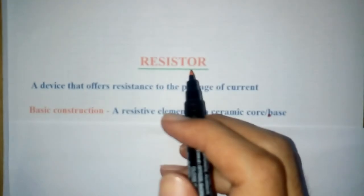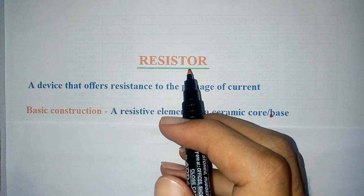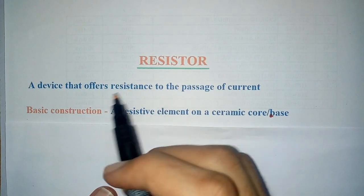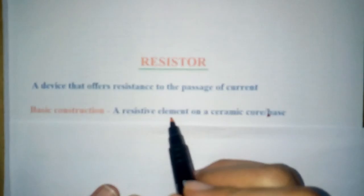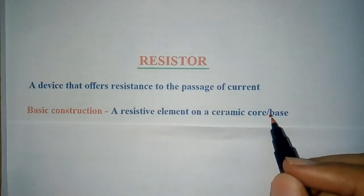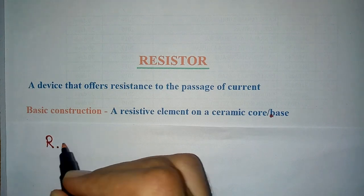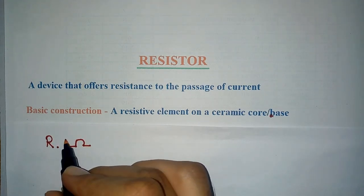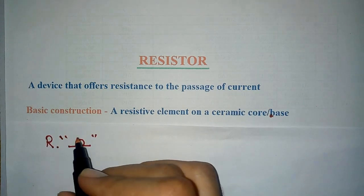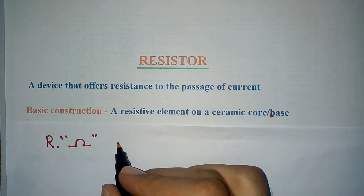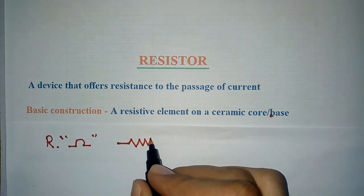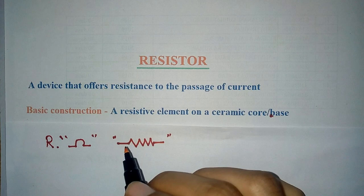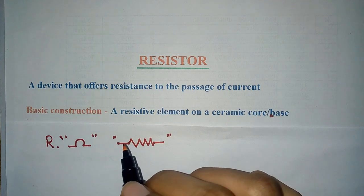Resistor is one of the three main basic components of electrical electronics. It is a device which offers resistance to passage of current and its basic construction is a resistive element on a ceramic base or core. It is denoted by R and it is measured in ohms. The symbol of resistor is this. This is a general symbol but it has many other symbols which differ based on its type.